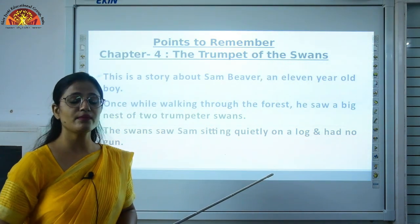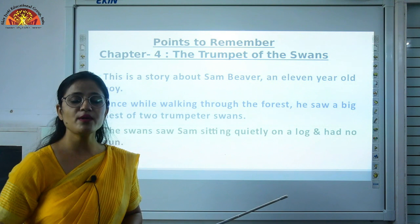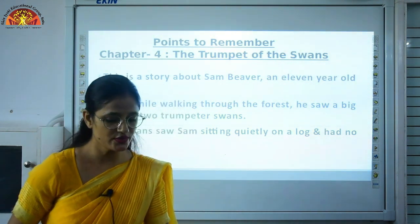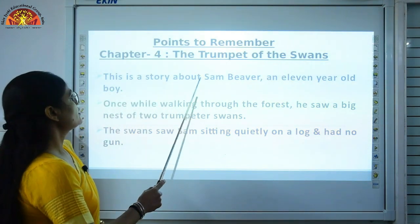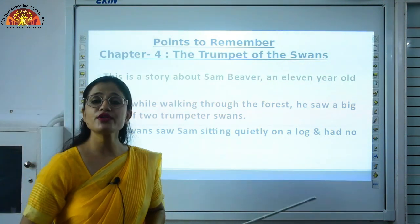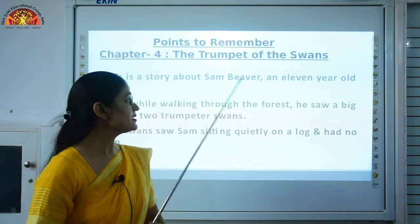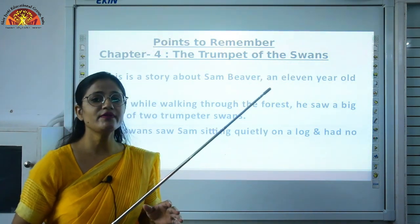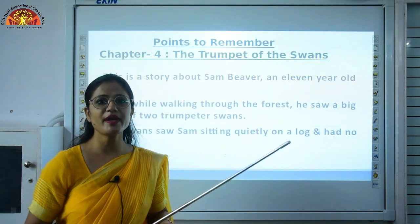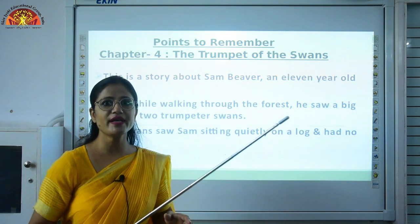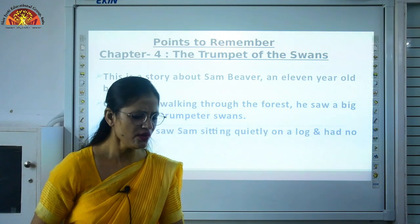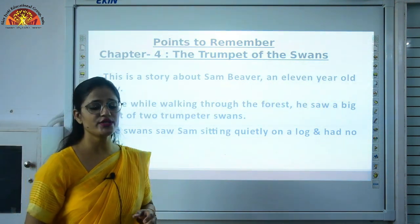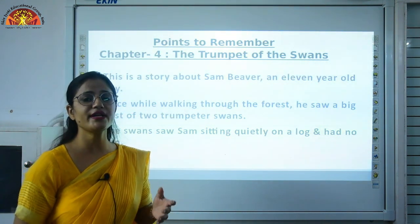As we have read this chapter, it is the story about a boy — a small boy — and a pair of swans. You can open page number 37 in your book. This is a story about Sam Beaver, an 11-year-old boy. One day he was going through the jungle and in between the jungle he saw a small pond, and in that pond there were two swans — a pair of swans, one cob swan and one swan. The male swan is called the cob. He walked through the forest and saw a big nest of two trumpeter swans. It is very rare to see trumpeter swans, and he was feeling very happy to see them.